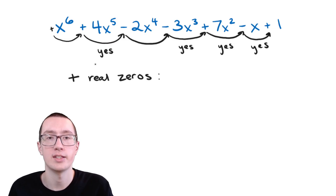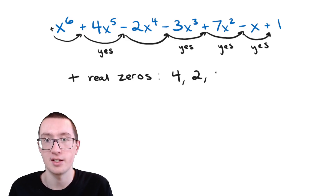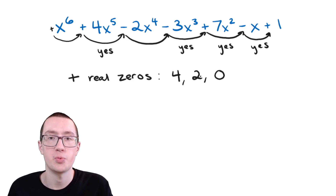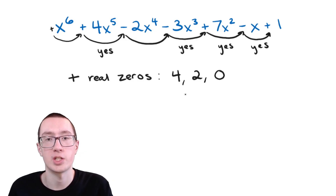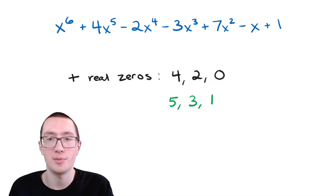Or you can decrease that number by an even number. We had four sign changes, which means it's possible that we have four positive real zeros — positive answers like three or seven. But we might not have four of them. We can decrease this number by two and still have a possible amount. So we could have four, we could also have two, or we could subtract by two again and have zero. You always keep subtracting by two for your different possibilities. So we're not going to have three positive real zeros — that's not possible because you subtract by two, not one.